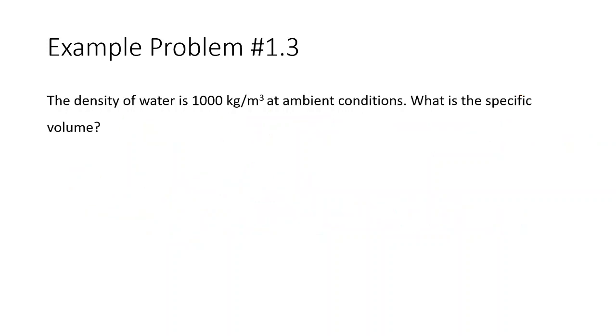So a final example problem today. We're given the density of water is 1,000 kg per meter cubed at ambient conditions, about 25 degrees C, atmospheric pressure. And it's asking, what is the specific volume? So the only thing we need to remember here is that specific volume is equal to one over the density.